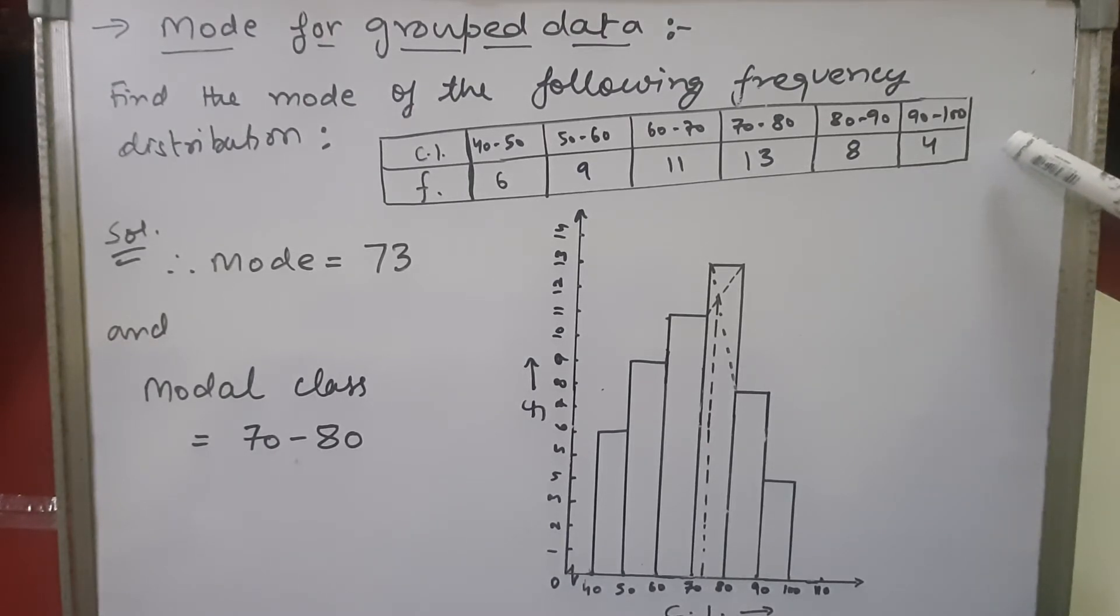Frequency is given as 6, 9, 11, 13, 8, 4. For drawing mode of the grouped data, remember we have to take the help of the histogram. Here, along the x-axis I've drawn the class interval. Along the y-axis I've drawn the frequency.